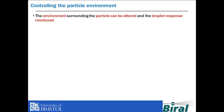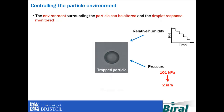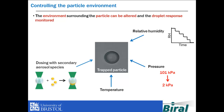Additionally, the environment surrounding the particle can be altered and the droplet response is monitored in real time. Once a particle has been trapped, the relative humidity, pressure and temperature of its surroundings can be varied. We can create internally mixed particles by dosing the trapped droplet with secondary aerosol species, and the gas phase composition surrounding the particle can also be altered by introducing different chemical species into a gas flow.